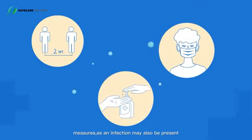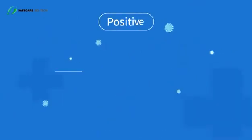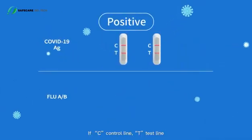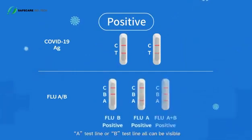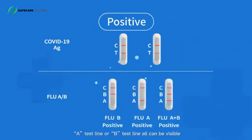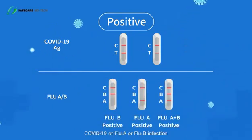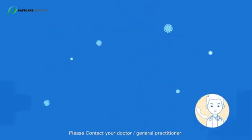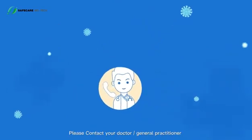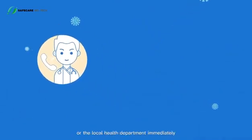If C control line, T test line, A test line, or B test line all can be visible, the result is positive. You may currently have a COVID-19 or flu A or flu B infection. Please contact your doctor or general practitioner or the local health department immediately.